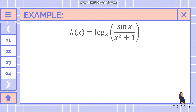First we look at this function and check how many terms there are. In h of x there is only one function, which is the logarithm. Within that logarithm there is still another function: sine of x over x squared plus one. This makes it a composite function — a function within a function — so we will use the chain rule.